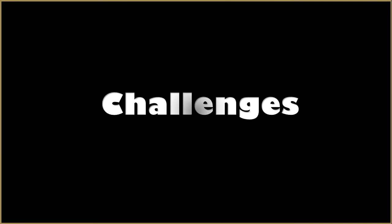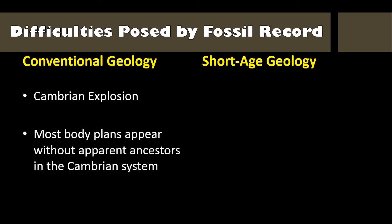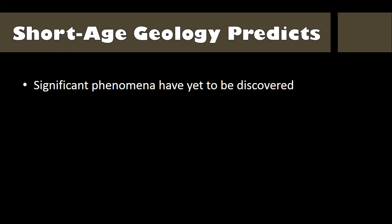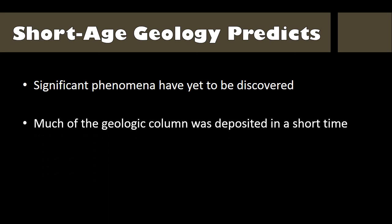The fossil record poses difficulties for both models of Earth's history. For example, the Cambrian explosion has challenged evolutionists ever since the time of Darwin. The fact that most body plans appear without apparent ancestors in the Cambrian system is difficult to explain using the paradigm of conventional geology. In the same way, short-age geology is challenged by the radiometric dates of volcanic rock within the geologic column that are measured in millions instead of thousands of years. Short-age geology predicts that significant phenomena have yet to be discovered and that when all the data are in, it will be determined that much of the geologic column was deposited in a short time.